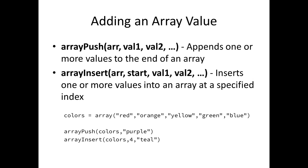If you want to add a value to an existing array, there are several functions you can use: push and insert. Push will add one or more values to the end of the array. Insert will insert values at a specific location. With insert, you need to specify where in the array you want to put those values. In this example, push will add purple to the end after blue. The array insert call will insert the word teal at index four, which is the fifth spot, so teal goes where blue was and blue and purple come after.